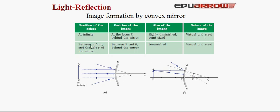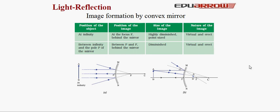Let us now study the mirror formula and magnification. The mirror formula is: 1/V + 1/U = 1/F, where V is the distance of image from the pole of the mirror, U is the distance of object from the pole of the mirror, and F is the focal length. By convention, the left side of the mirror is taken as negative and the right side as positive. Distance measured above the principal axis is positive and below the principal axis is negative.